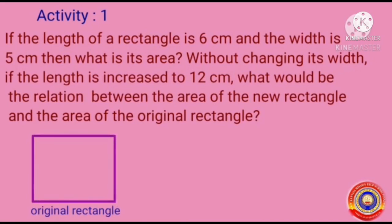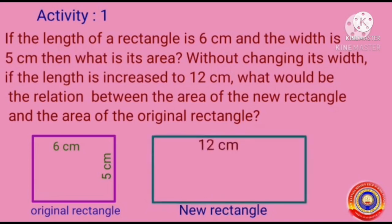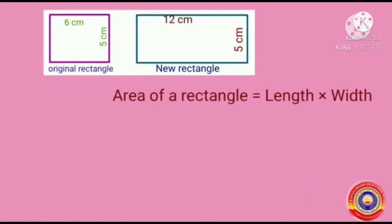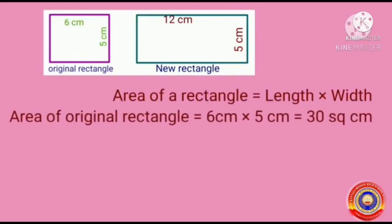The length of the original rectangle is given as 6 cm and its width is 5 cm. In the new rectangle, the length is increased to 12 cm, which is equal to 6 into 2 — that is, the length is doubled. There is no change in the width. At first, we have to find the area of the original rectangle. Area of the original rectangle equals 6 cm into 5 cm, which is equal to 30 square centimeters.